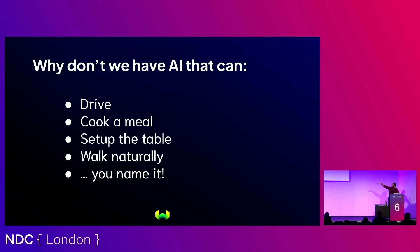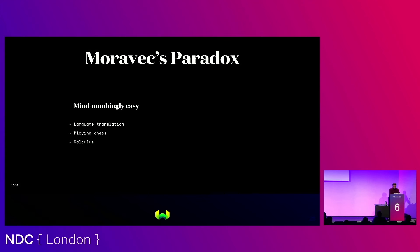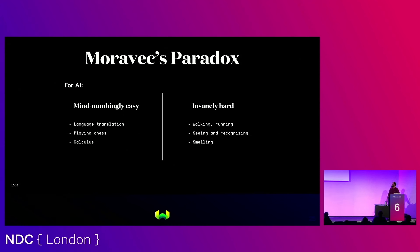We start off with something probably the most difficult for humans — driving — and go down the list where things get easier: cooking a meal, walking naturally. We don't have robots that can reliably do this. The reason a lot of people think this is the case is explained using this paradox. For AI, things on the left — calculus, power iterations, chess at superhuman levels, translating language — these are essentially solved. But on the right you've got things that are insanely difficult for AI and trivially easy for us: the basic senses, walking, running. These are things we don't even pay attention to.